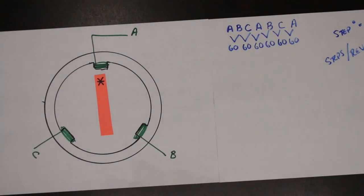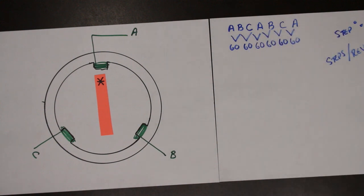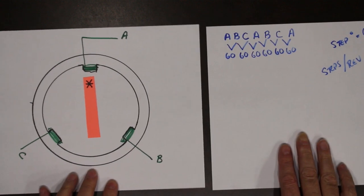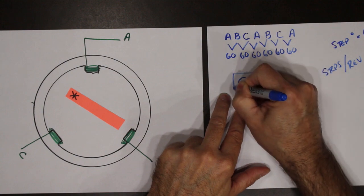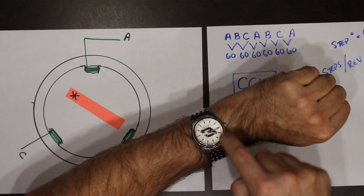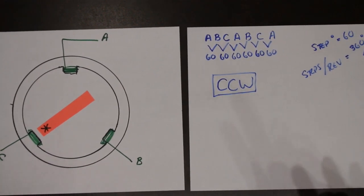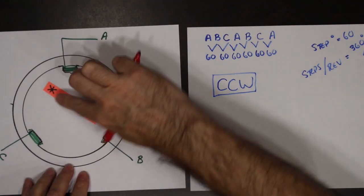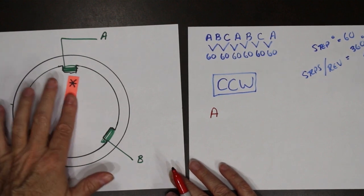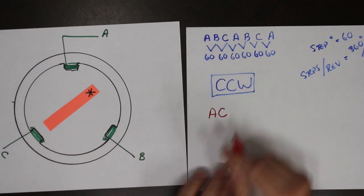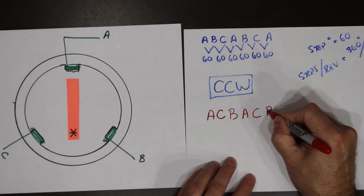What about direction? When I make the A, B, C, A, B, C stepping sequence, you will notice that in this setup I am actually rotating counter clockwise. If I wanted to go clockwise, all I have to do is change my stepping sequence. So starting off at A, I go from A, C, B, A, C, B, and so forth. Every step in this example is 60 degrees.